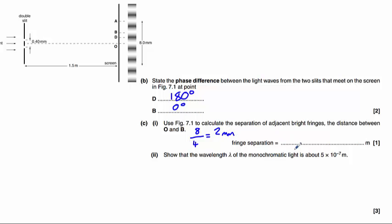So the best way of calculating this will be to do 8 divided by 4 which gives us 2mm between each set of fringes. So that's 2 times 10 to the minus 3 metres.